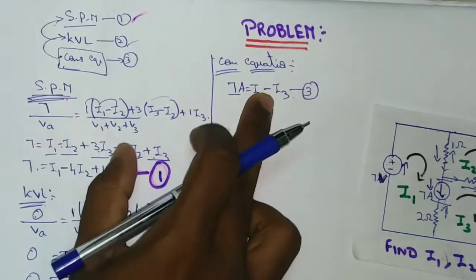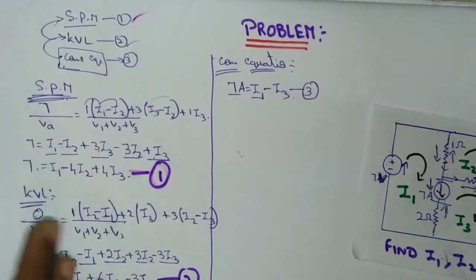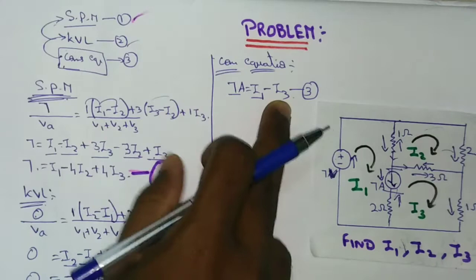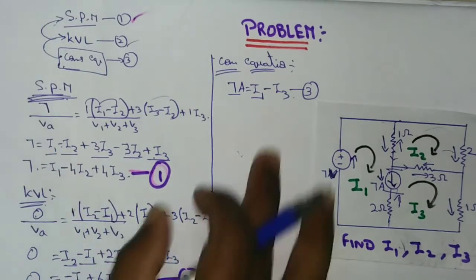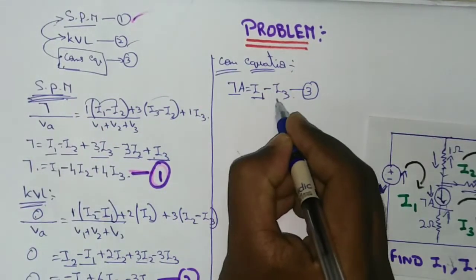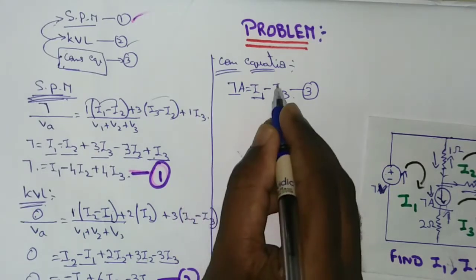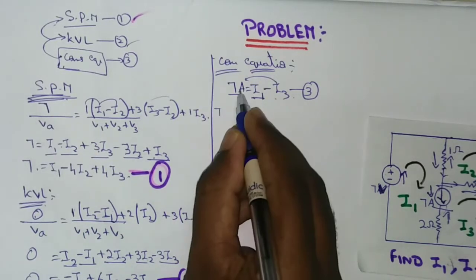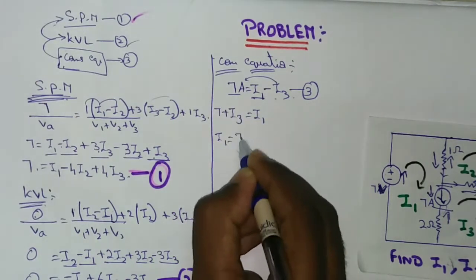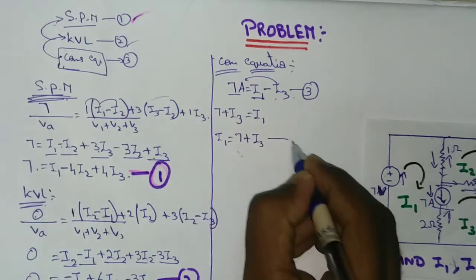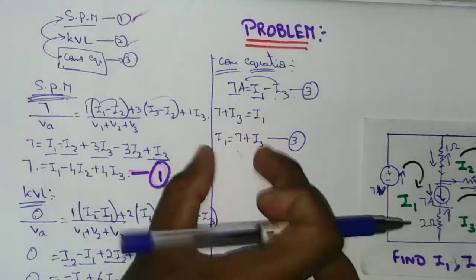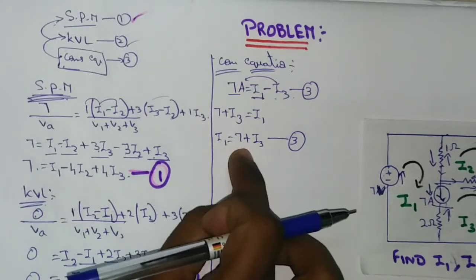7 amps equals I1 minus I3. Rearranging: I1 minus I3 plus I3 equals 7 plus I3. So I1 equals 7 plus I3. This is actually the third — the constraint equation.